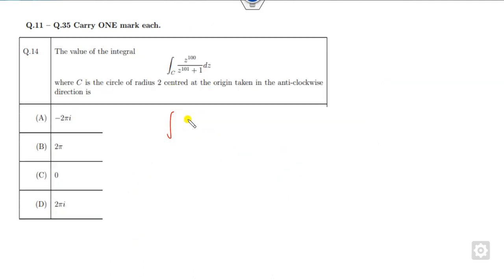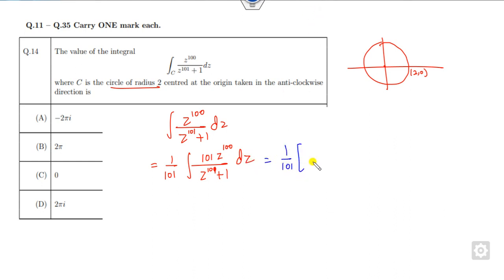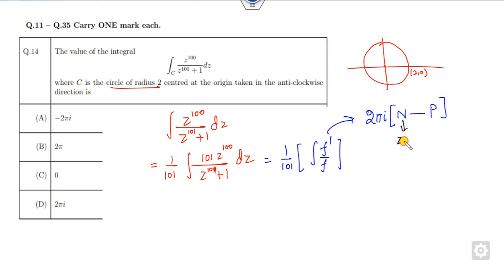Now look at the next question. C is a circle of radius 2 centered at the origin, so this represents the point 2,0. I can write the integrand in the form of f'(z)/f(z). Do you remember what that means? By the argument principle, the integral of f'(z)/f(z) equals 2πi times (number of zeros minus number of poles) of f(z) inside C.